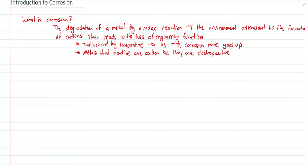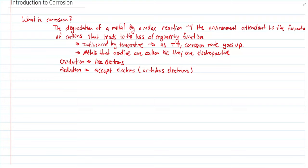For now we're just defining terminology. Oxidation and reduction happen on the metal surface. It's important to note that electrons do not and cannot transfer via water. Our focus for the next ten to fifteen lectures will be aqueous corrosion — we assume a metal in a water solution. Those electrons only transfer on the metal surface.